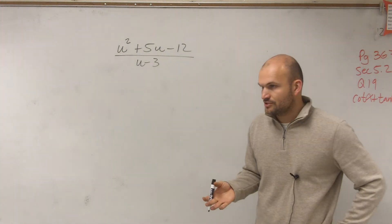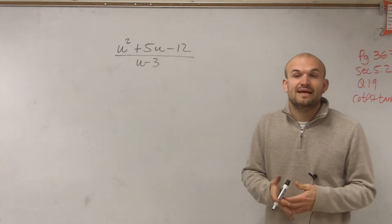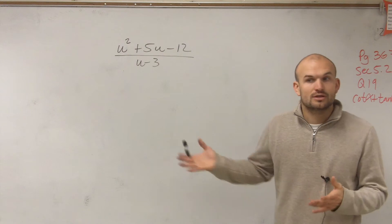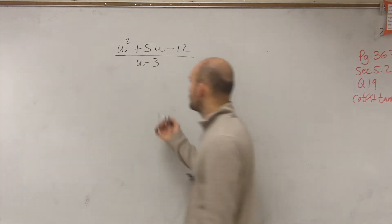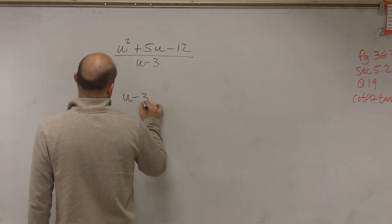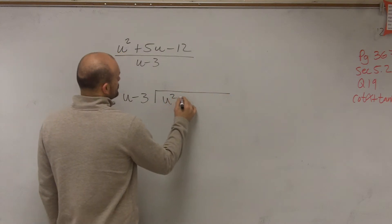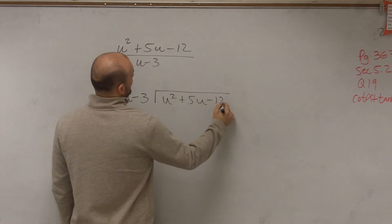So when applying long division, we have to use our long division algorithm, which means we're going to make this now look like actually our long division. So we'll have u minus 3 divides into u squared plus 5u minus 12.